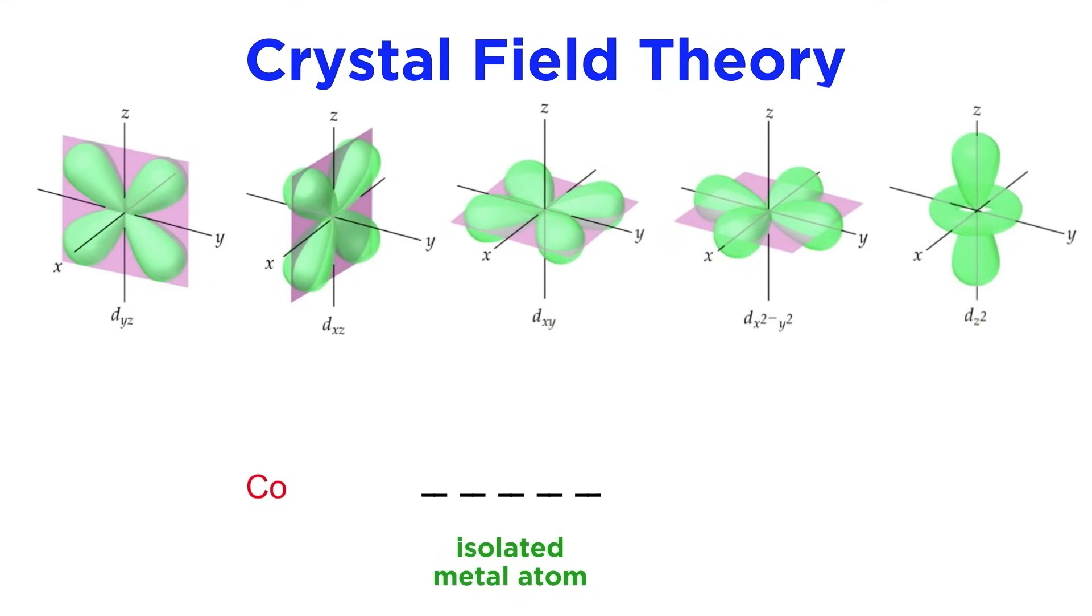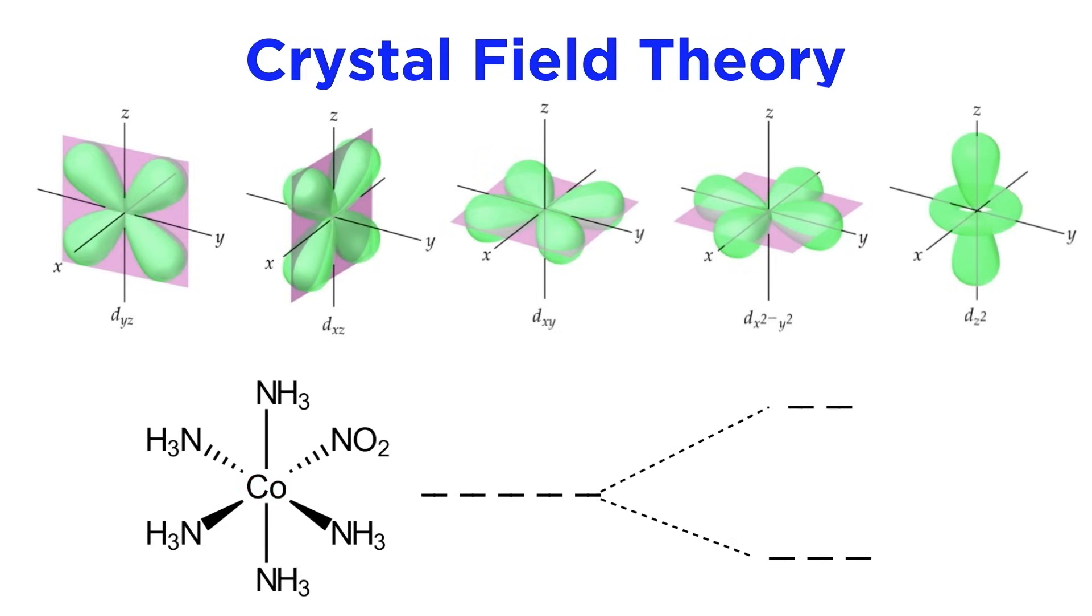For this reason, whereas for an isolated metal atom the d orbitals all have the same energy, in an octahedral complex, these two orbitals we mentioned have a higher energy, as they point in the direction of ligands, and we refer to them as the eg orbitals, while the other three are the t2g orbitals, which point in between ligands. The difference in energy between these two sets of orbitals is called the crystal field splitting energy.